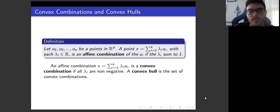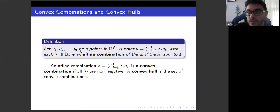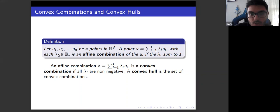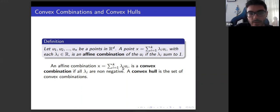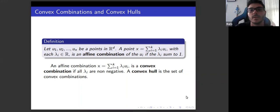Let's define convex combinations and convex hull. A point x of the form x equals the sum of lambda_i times u_i is an affine combination of the u_i with real coefficients lambda_i, where u_i are points in d-dimensional space and the summation of lambda_i must equal 1. If the lambda_i are non-negative, then the affine combination x is called a convex combination, and the set of all convex combinations is called the convex hull.